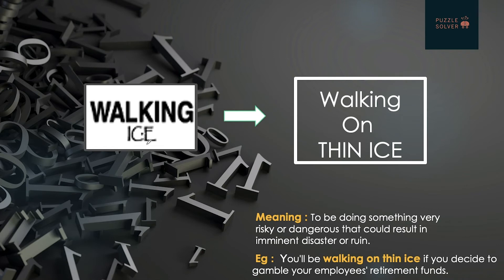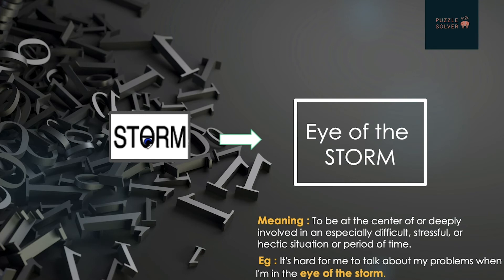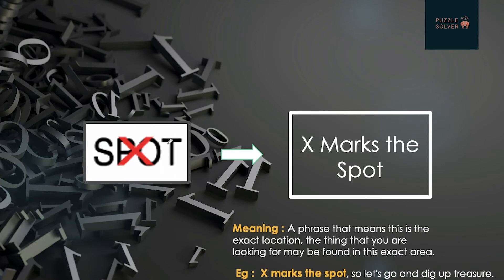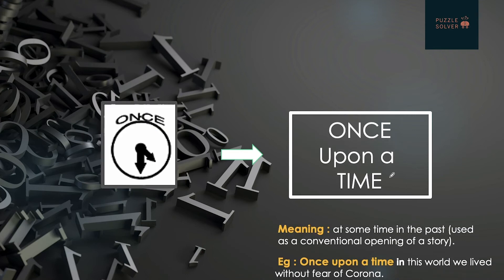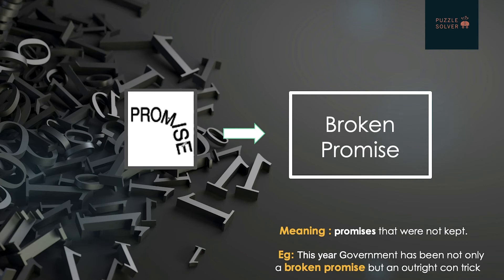Next, 'walking' is written over 'ice' but the ice is written in a thin font and walking is thick, so it is 'walking on thin ice'. Next, there is an eye present inside a storm, so it is 'eye of the storm'. Next, an X mark is present on the top of the word 'spot', so it is 'X marks the spot'. Next, there is a clock and the word 'once' is written on it, so it is 'once upon a time'.